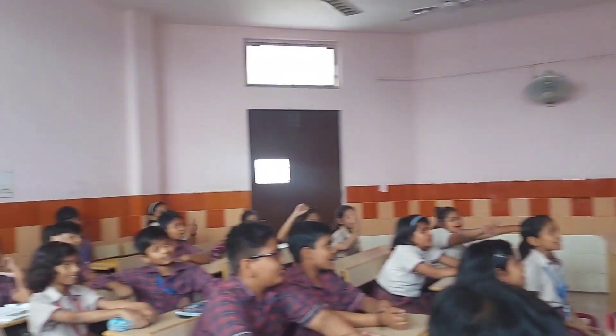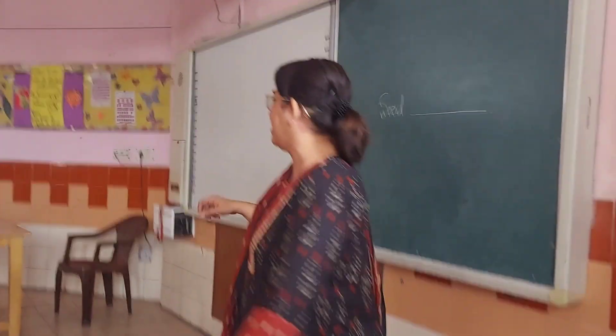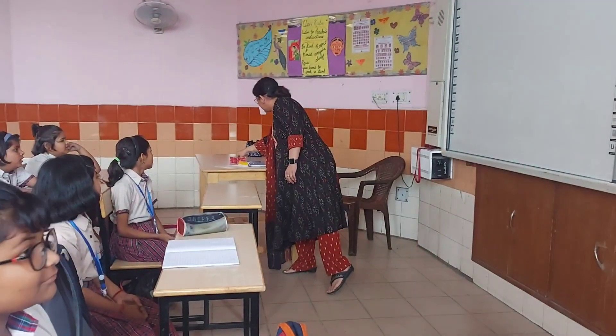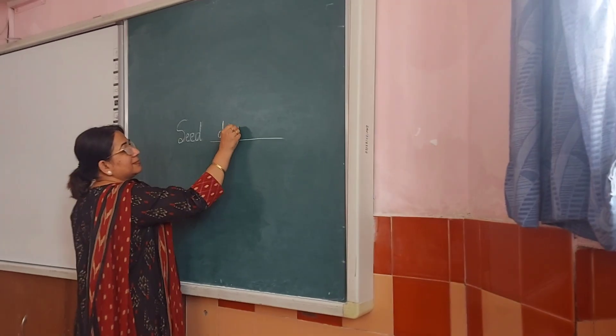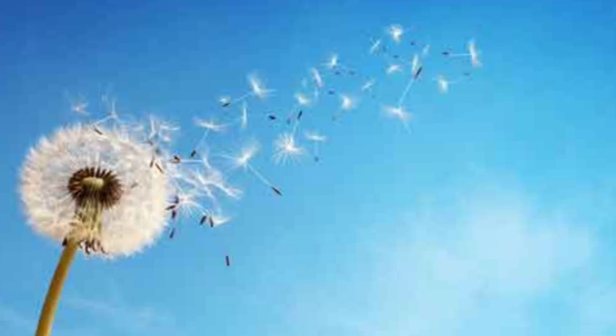A dispersal. So today we are going to study about seed dispersal. The movement of seeds from one place to another is called seed dispersal. There are many ways by which seeds get transferred from one place to another, so that means there are different agents of seed dispersal.